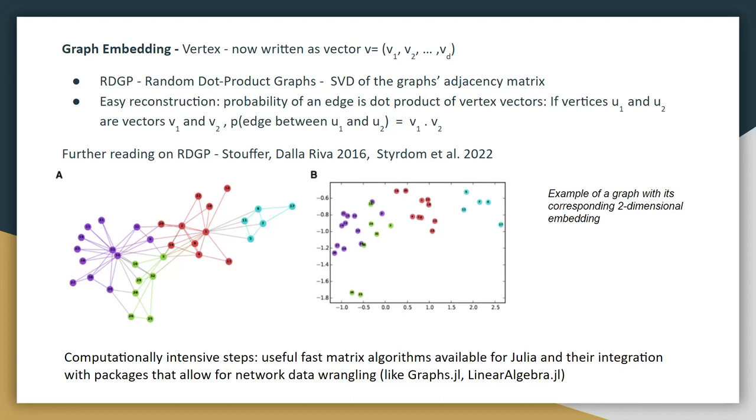Now the first step we need to do is to create a graph embedding. We use RDGP, or random dot product graphs, which take a singular value decomposition of the graph's adjacency matrix. Now this gives us each vertex now written as a vector of dimension D. And one great thing about RDGP is the easy reconstruction back to graph format, as the probability of an edge is given by the dot product of the vertex vectors. So if I have vertices U1 and U2, given by vectors V1 and V2, we have that the probability of the edge between U1 and U2 existing is the dot product of those two vectors.